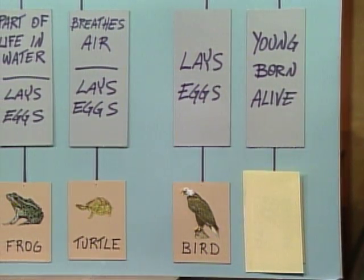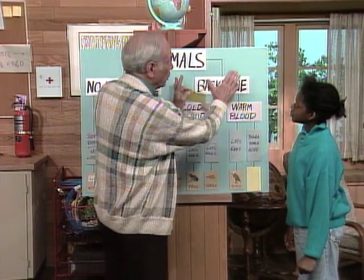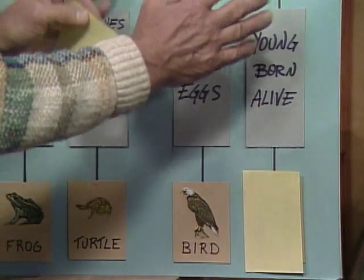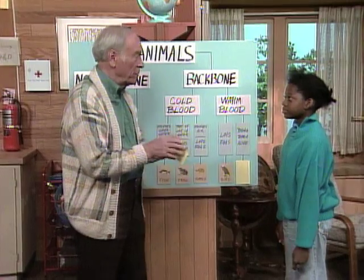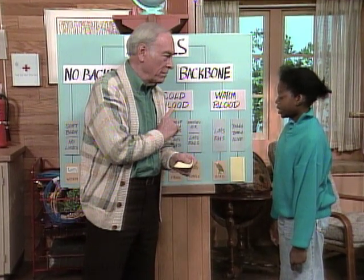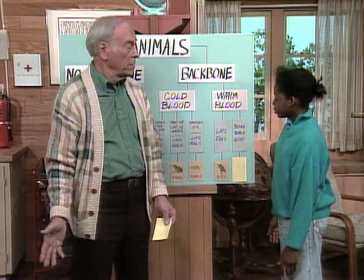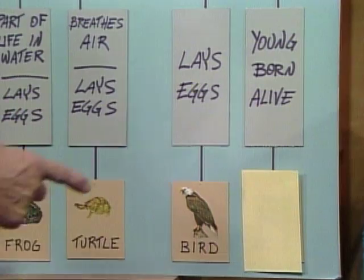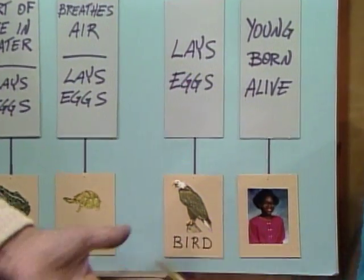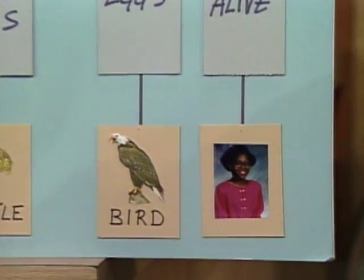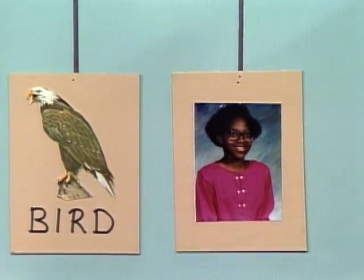Notice we've finished with all the no backbones, and we've finished with all the backbone, warm blood, except for that one. All the animals were here today, live. And we've run out of containers. Where could it be? Uncover the picture. That's me! Yes. What kind of an animal are you? A mammal. A mammal. Right.